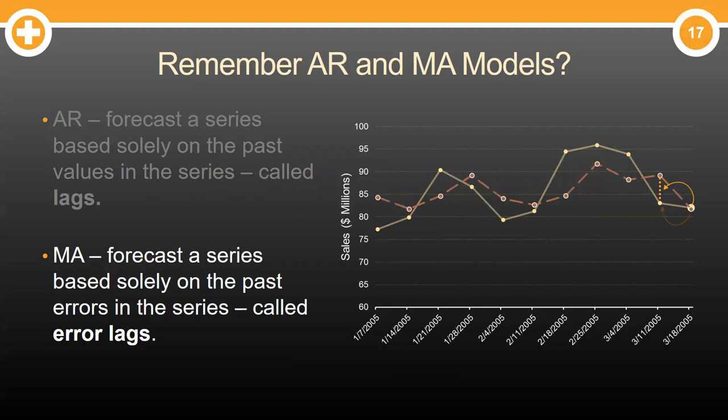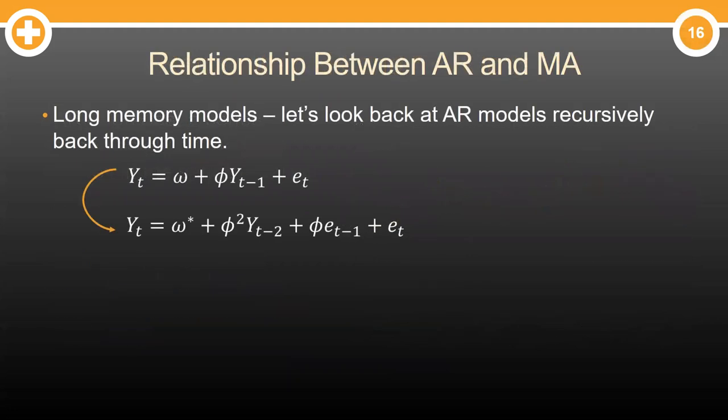These models are actually related to each other. Remember that AR models are called long memory models. This is because we can recursively look back over time and still see effects from lags. Take a look here. We have YT that depends on YT-1. Well, that also means that YT-1 depends on YT-2, which also means that YT depends on YT-2.